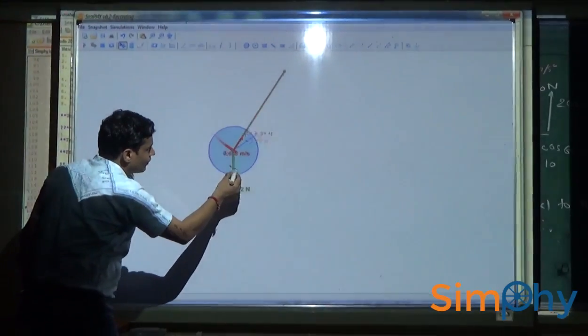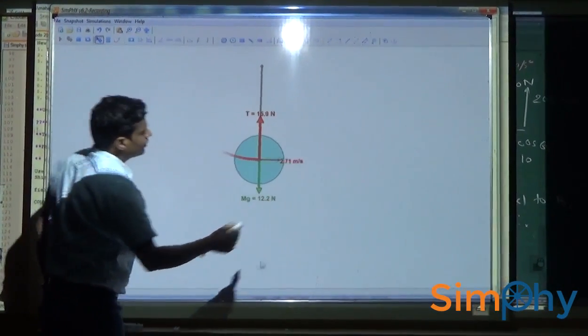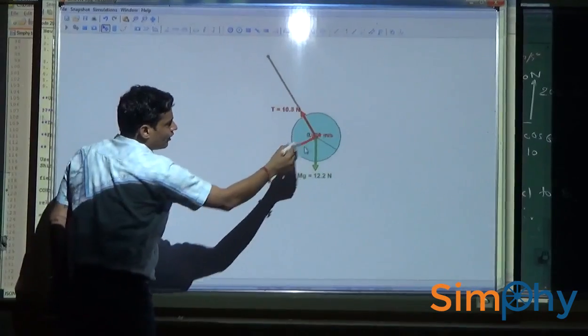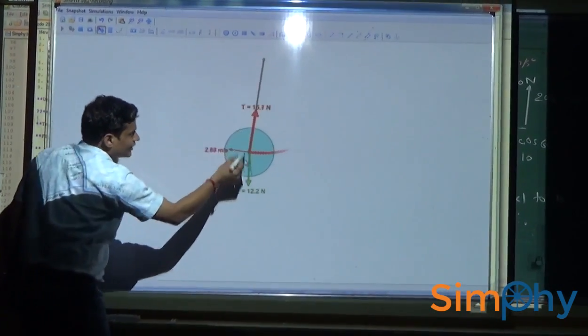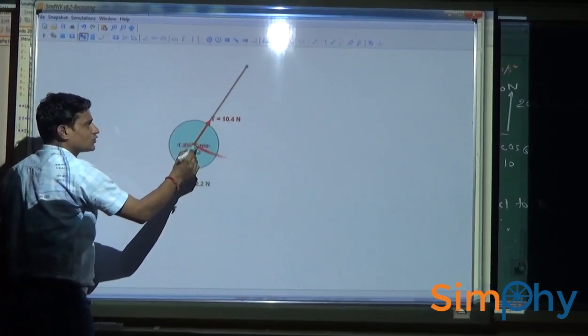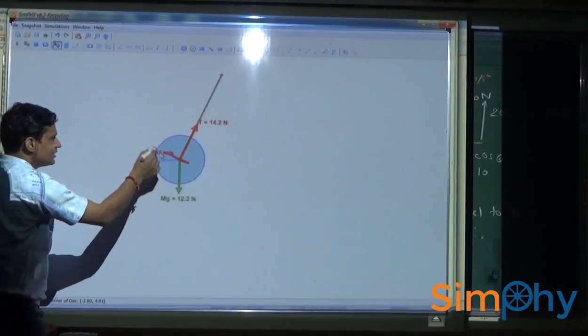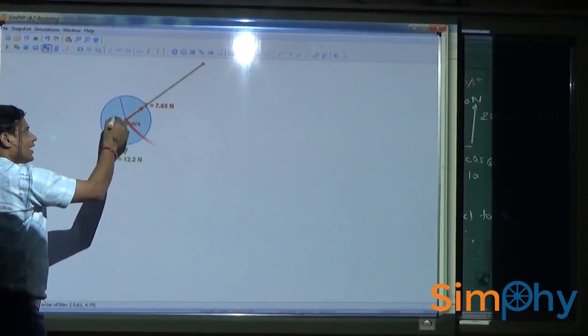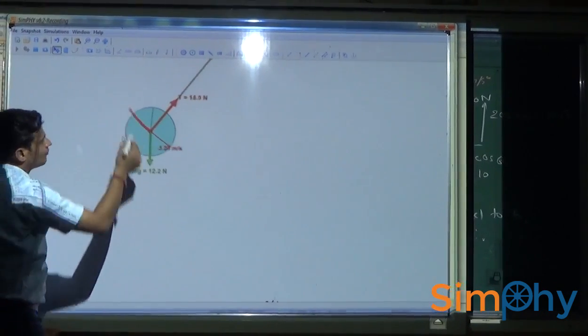Try decreasing the amplitude. If amplitude is small, the maximum tension that is at bottom is also small. On increasing amplitude, speed as well as tension both increase.